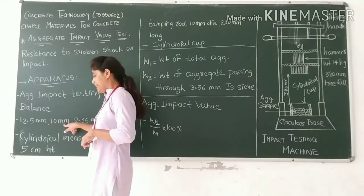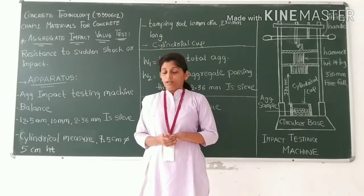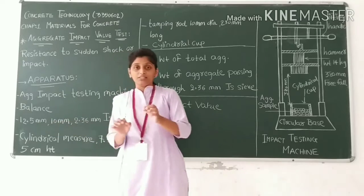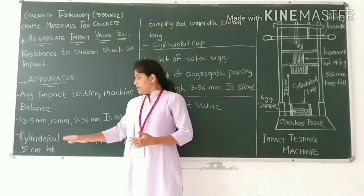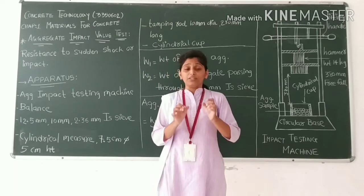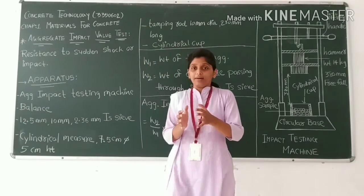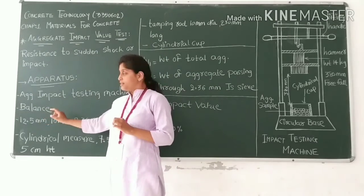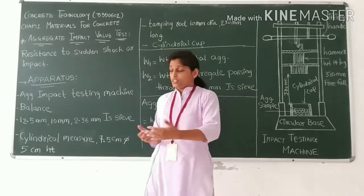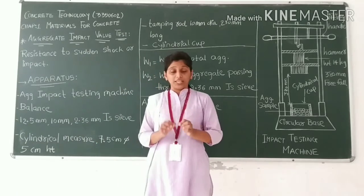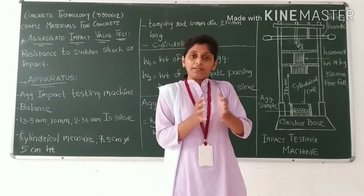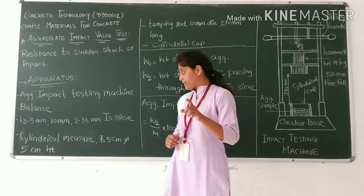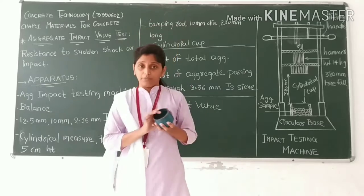For the sample, we use Indian Standard sieves of 12.5 mm and 10 mm. The aggregate passing through the 12.5 mm IS sieve and retained on the 10 mm IS sieve is selected as the aggregate sample.